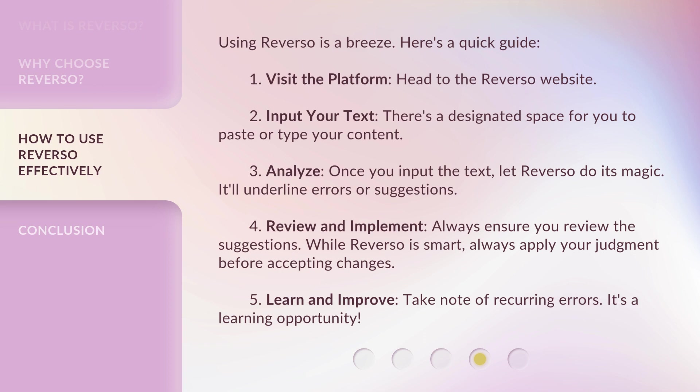Four: review and implement — always ensure you review the suggestions. While Reverso is smart, always apply your judgment before accepting changes. Five: learn and improve — take note of recurring errors. It's a learning opportunity.